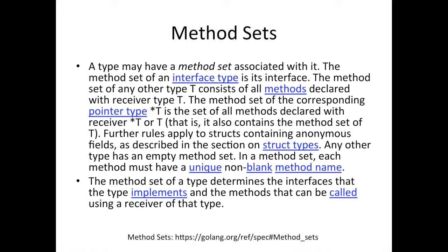Any other type has an empty method set — if you haven't defined any methods with a receiver, the method set is empty. Also, each method must have a unique non-blank method name. This means there's no overloading in Go. For people who know Java or C++, you can't use the same method name and differentiate it by parameters or return type — that's not happening in Go. So unique, non-blank method names only.